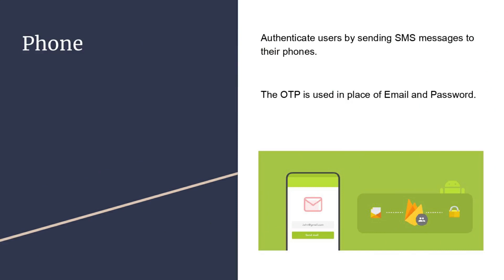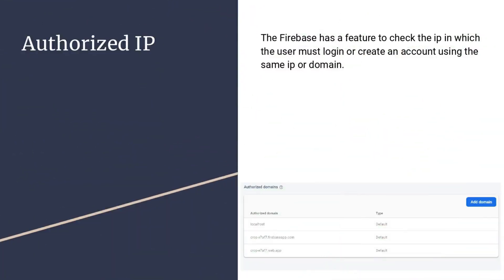Firebase also provides ways to authenticate users based on accounts they have in Google, Facebook, Twitter, GitHub, and many more. Mobile phone authentication works by sending SMS messages to the user's phone — the OTP is used in place of email and password, which is called passwordless sign-in. In addition to common methods, Firebase also provides advanced methods like authorized IP, which checks that the user must log in or create an account from the same IP or domain.